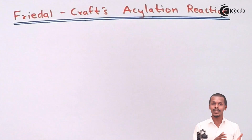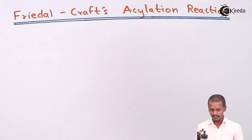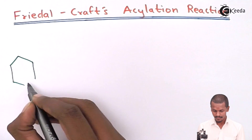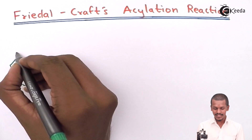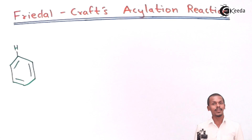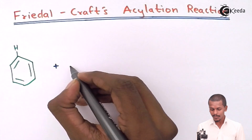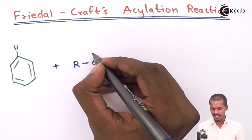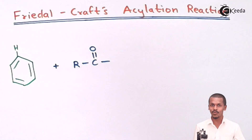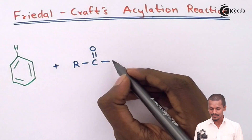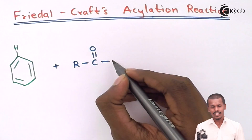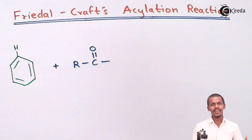Let me give you an example so it would be easy to understand. We have benzene and we have to react it with an acyl group. The acyl group is nothing but an alkyl group attached to a carbonyl group, and here we are going to use an acyl chloride. It is not only acyl chloride but any group that consists of an acyl group.